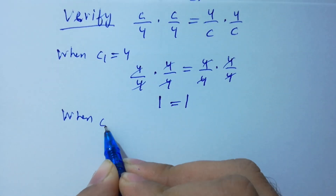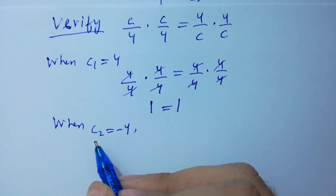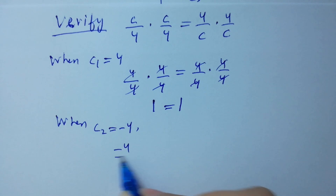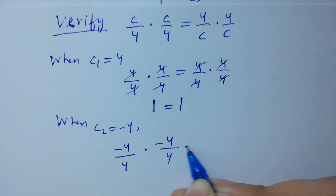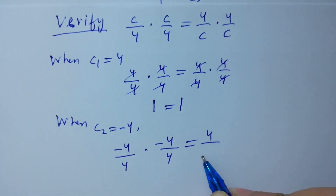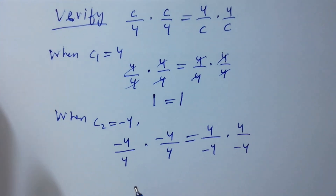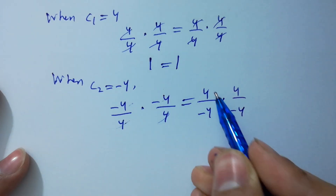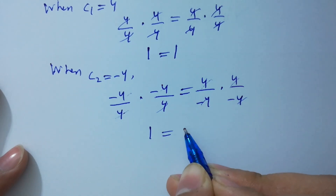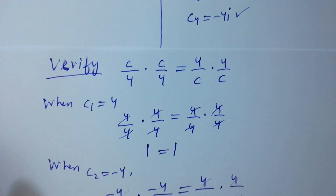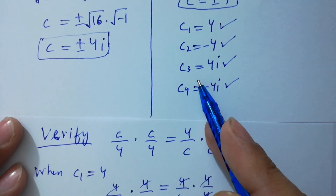When c2 equals minus 4, we have (minus 4/4) times (minus 4/4) equals (4/minus 4) times (4/minus 4). The 4s cancel and minus times minus gives plus 1 equals minus times minus plus 1, so 1 equals 1. It means c2 equals minus 4 is also correct.